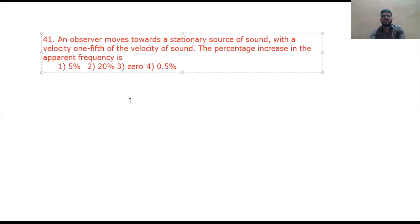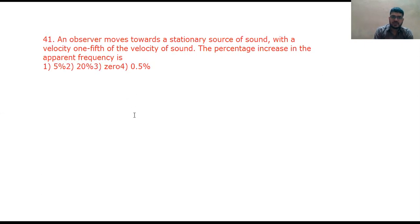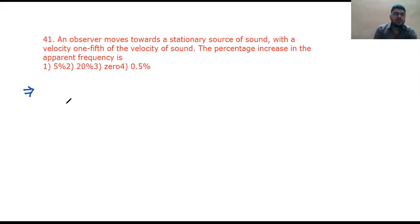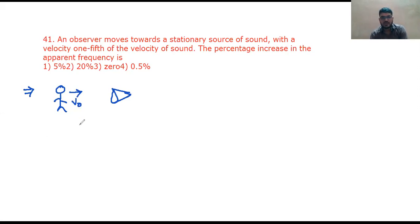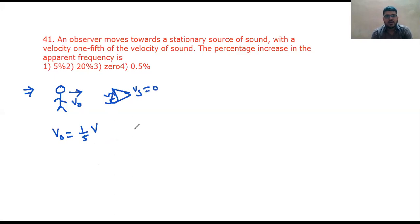Next question: an observer moves towards a stationary source of sound with a velocity one-fifth of velocity of sound. Draw a rough diagram first — observer is in motion, source is at rest. V naught equals V/5. Source velocity Vs equals zero. Find the percentage increase in apparent frequency.